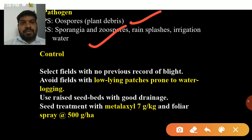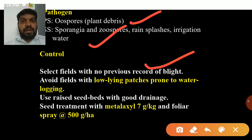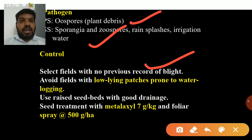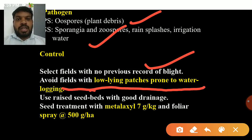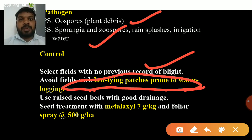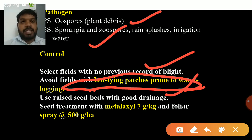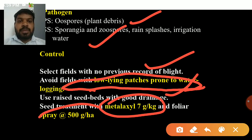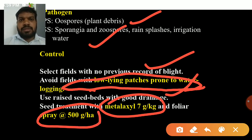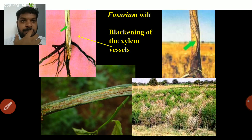Oospores are produced in plant debris and sporangia release zoospores that act as secondary inoculum. Management: select fields with no previous record of blight; avoid fields with low-lying patches prone to waterlogging; use raised seed beds with good drainage; seed treatment with metalaxyl 7 grams per kg; foliar spray with metalaxyl at 500 grams per hectare.